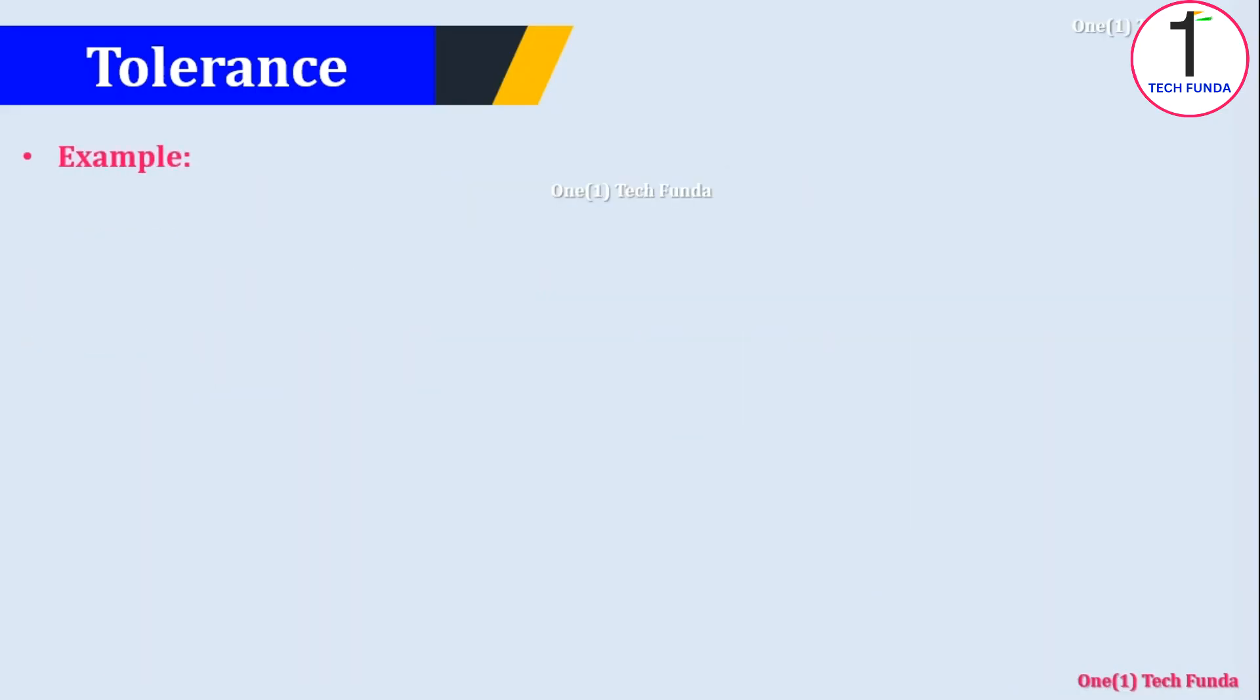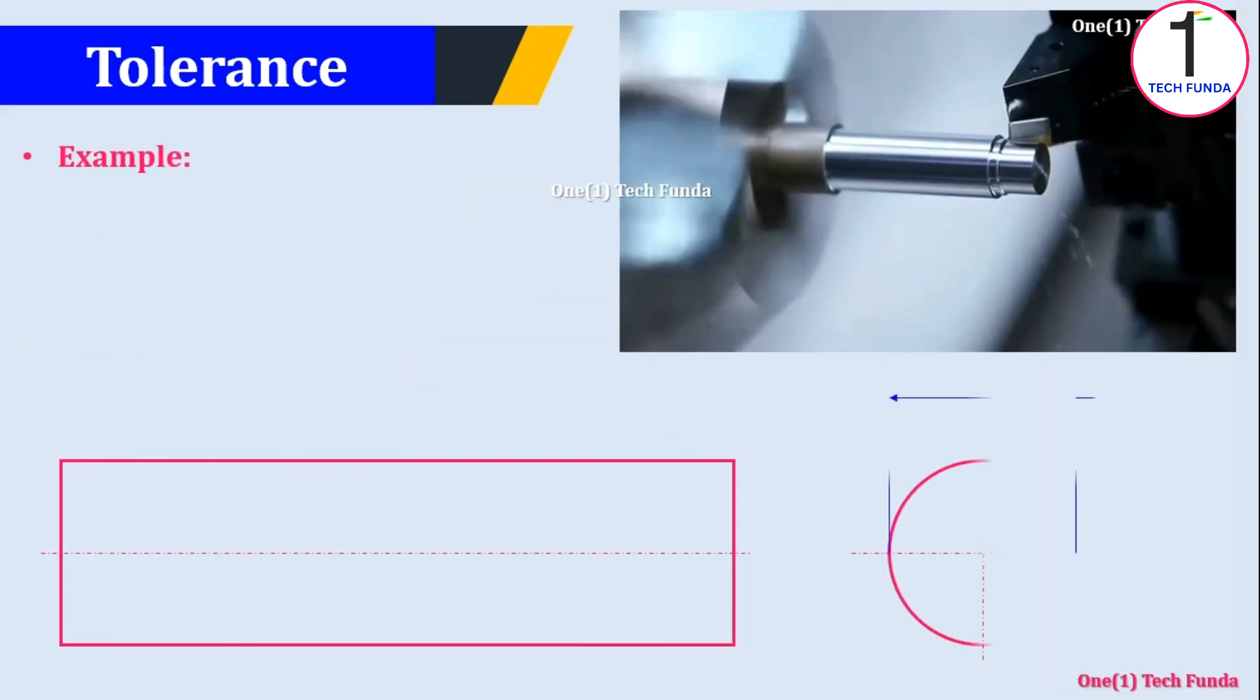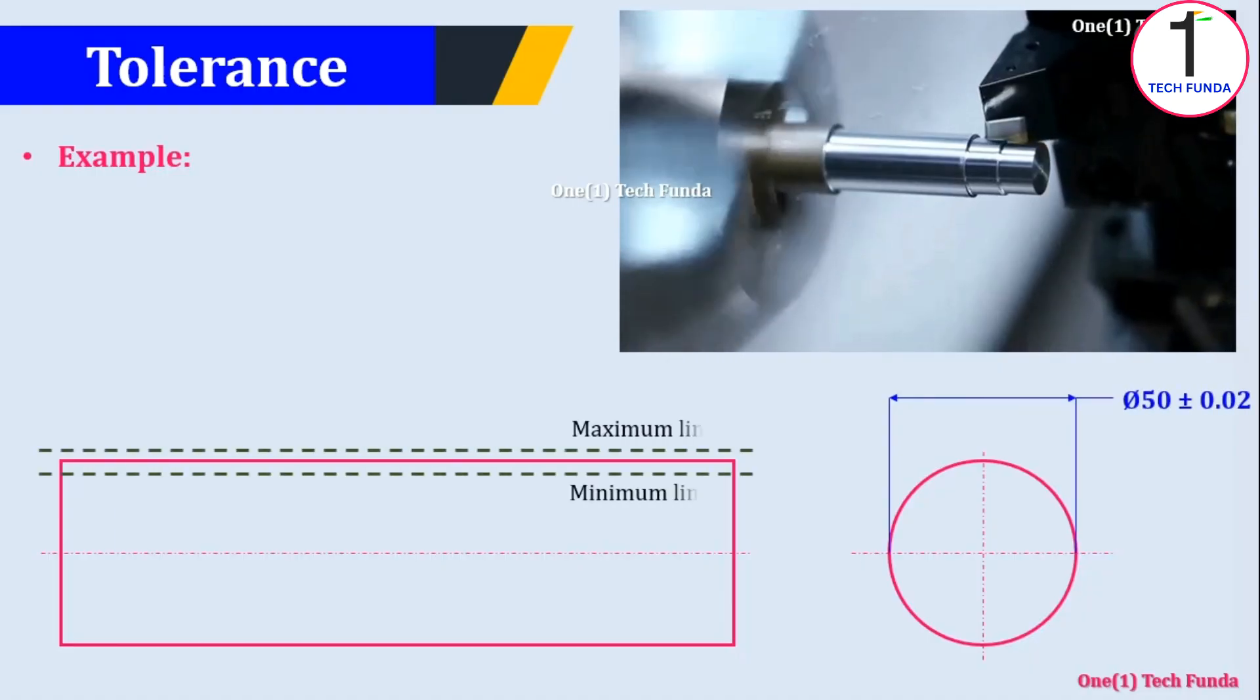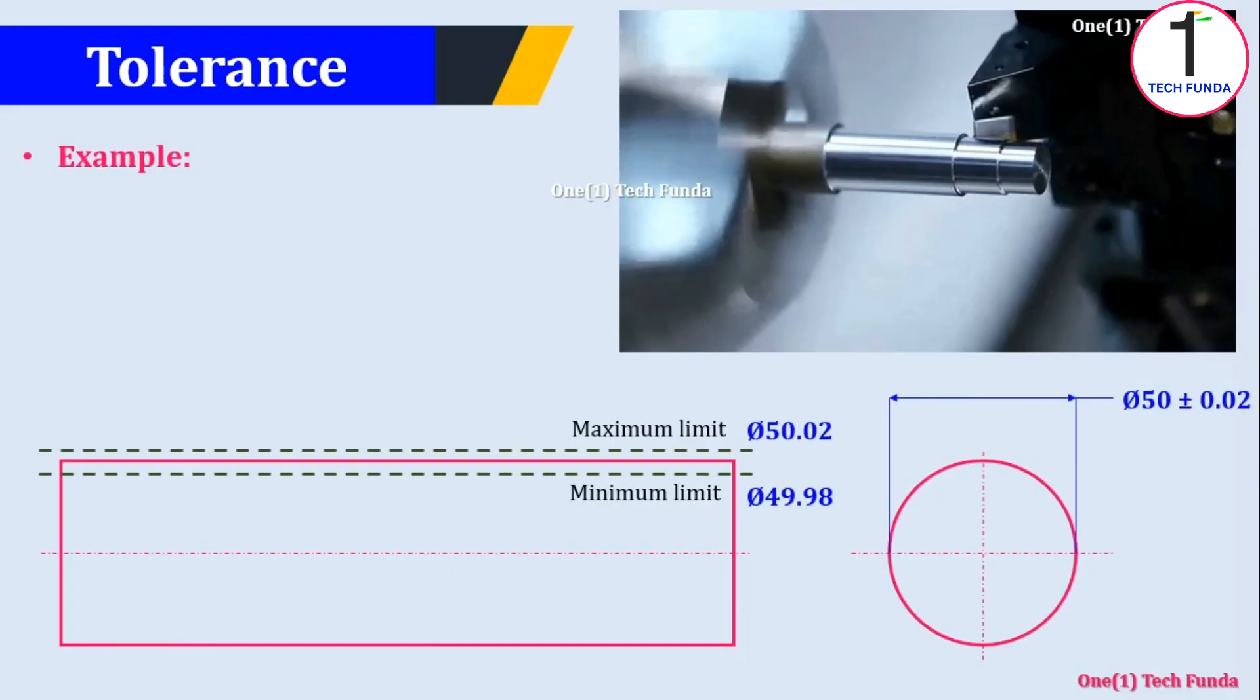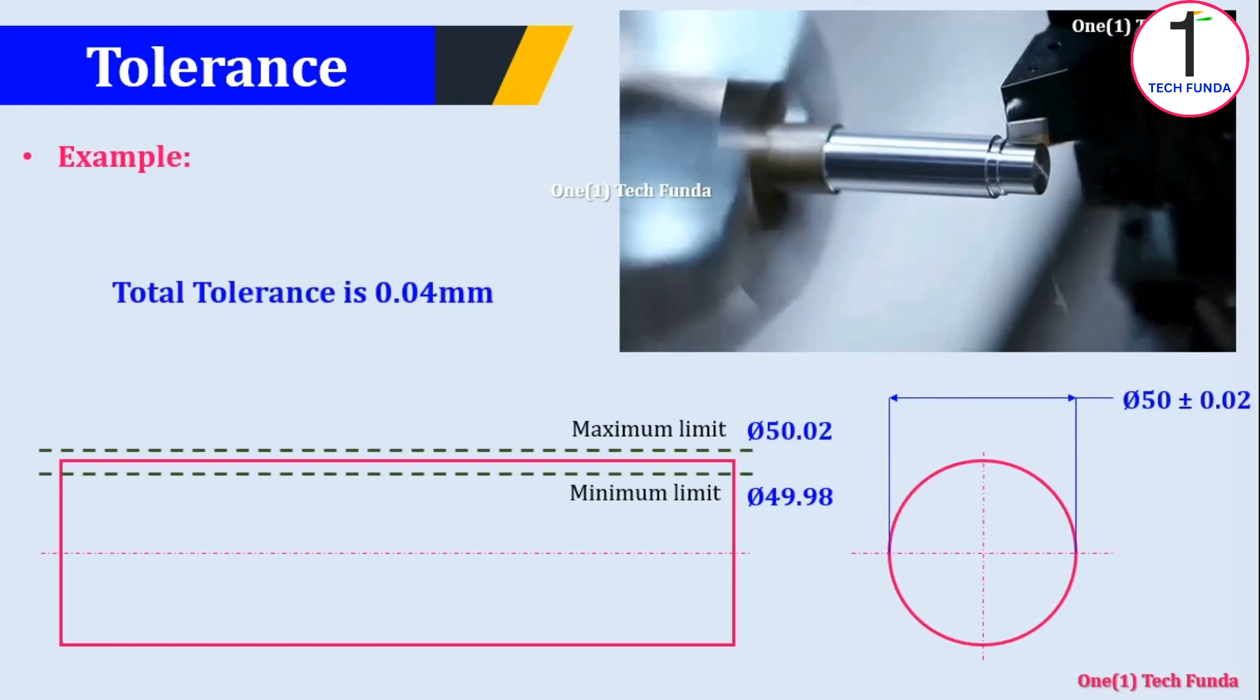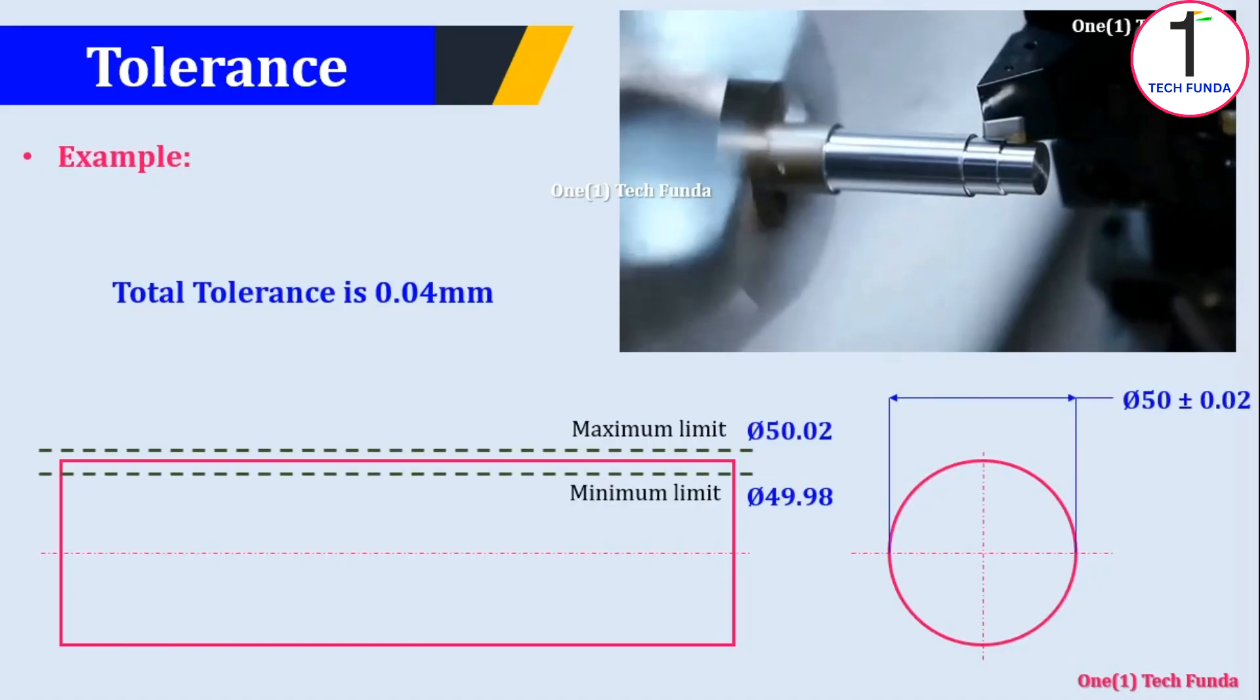Example: imagine a shaft diameter 50 mm with tolerance plus minus 0.02 mm. This means the actual size can range from 49.98 mm to 50.02 mm. Means total tolerance is 0.04 mm and it will still be acceptable.